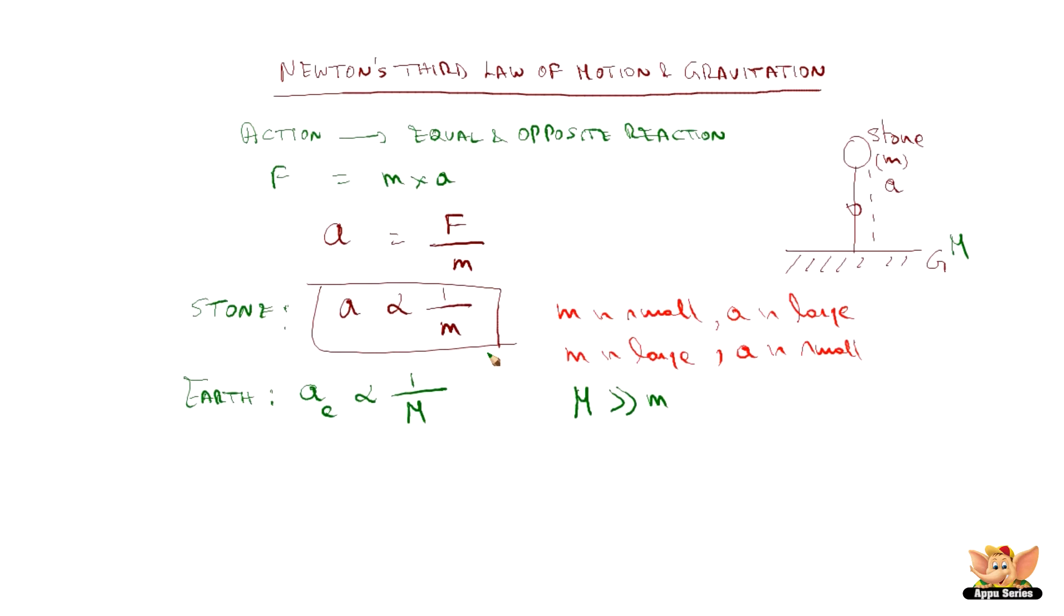What we understand from this equation is since the stone mass is very small, the acceleration is very large. So acceleration of the stone is very large. In this case, the mass of the earth is very high. Since it is inversely proportional, acceleration of the earth is very small. This is for the earth.